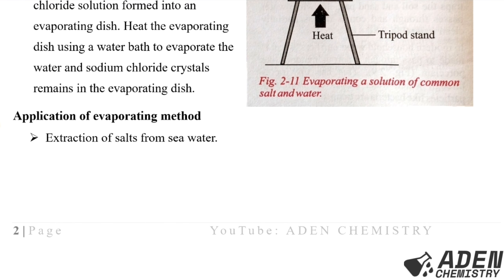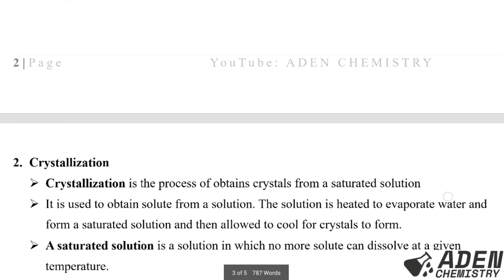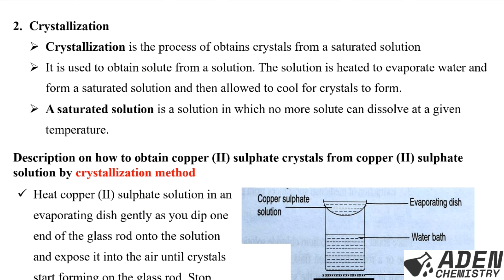The application of evaporation is the extraction of salts from sea water. The second method of separating soluble solid-liquid mixtures is crystallization. Crystallization is the process of obtaining crystals from a saturated solution. It is used to obtain the solute from a solution. The solution is heated to evaporate water and form a saturated solution, then allowed to cool for crystals to form. A saturated solution is a solution in which no more solute can dissolve at a given temperature.